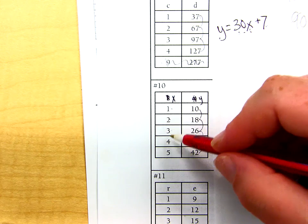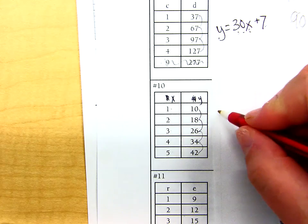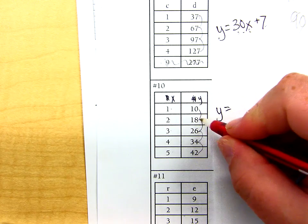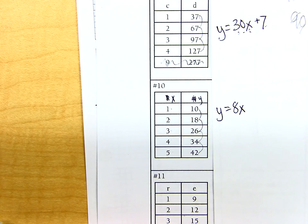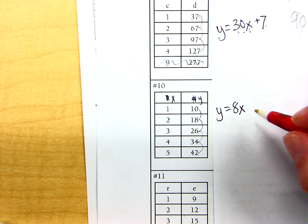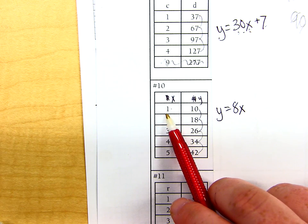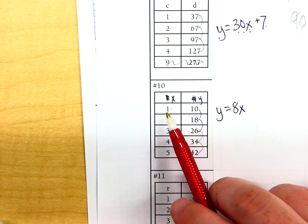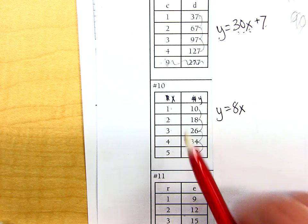So as long as your scale is by 1, which it is, I'm going up by 1 every time in the X's, whatever you're going up by, I'm just going to put that in front of the X. And then I'm just going to add or subtract to adjust to make it work out. So if I do 8 times 1, that gets me to 8. What do I have to do to get to 10? Add 2.